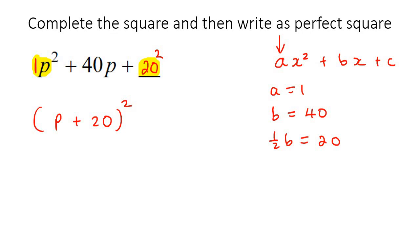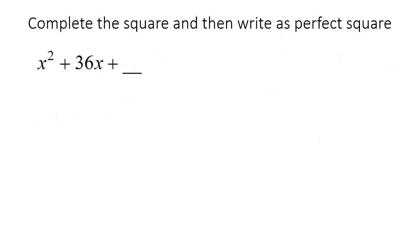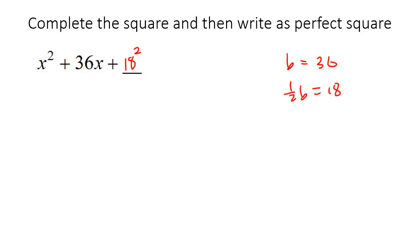Later on in this lesson, we're also going to be doing ones that have fractions, so it's going to get a bit more interesting as we go along. Here's the next one. Always make sure that the a value is a 1, which it is. Then look at the b value — it's 36. Take half of that, which would be 18. You're going to put that over there to the power of 2, then open up a bracket to the power of 2, and take these two things that have the power of 2.